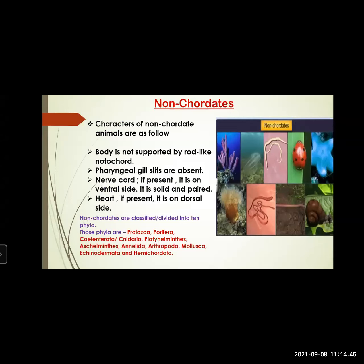When we talk about non-chordates: body is not supported by a rod-like notochord — notochord is absent. Pharyngeal gill slits are absent. Pharyngeal gill slits are filter-feeding organs — openings present in an organism between the throat and outside, responsible for filtration and respiration. Nerve cord, if present, is on the ventral side. Heart, if present, is on the dorsal side. These non-chordates are divided into 10 phylums: Protozoa, Porifera, Coelenterata, Cnidaria, Platyhelminthes, Aschelminthes, Annelida, Arthropoda, Mollusca, Echinodermata, and Hemichordata.